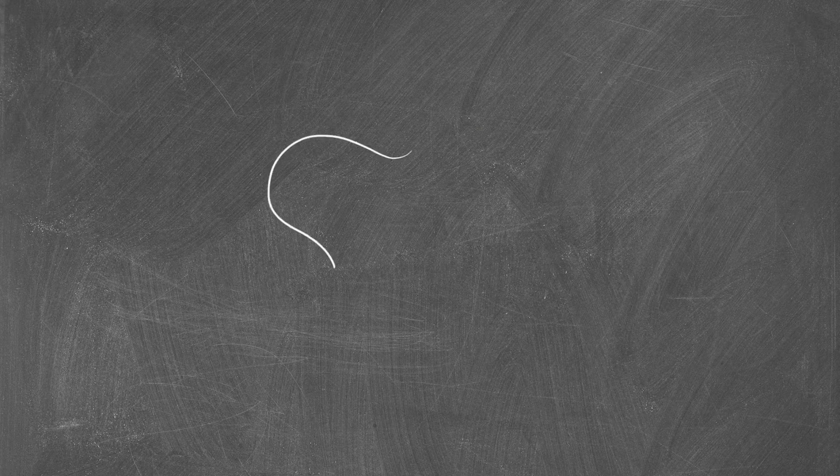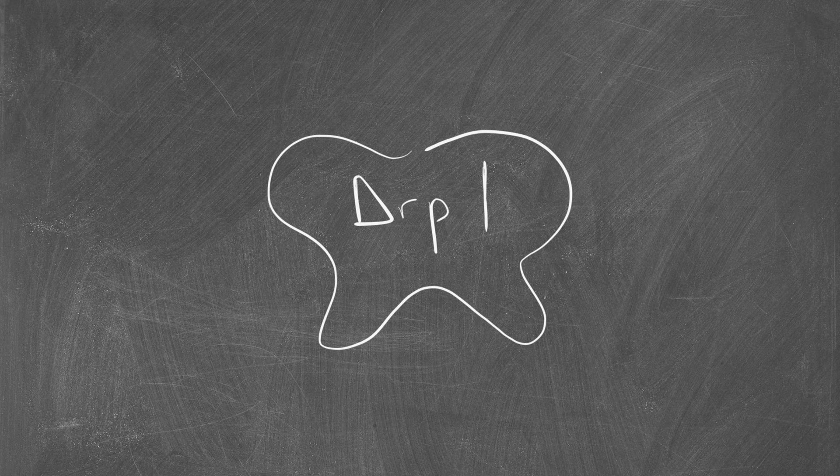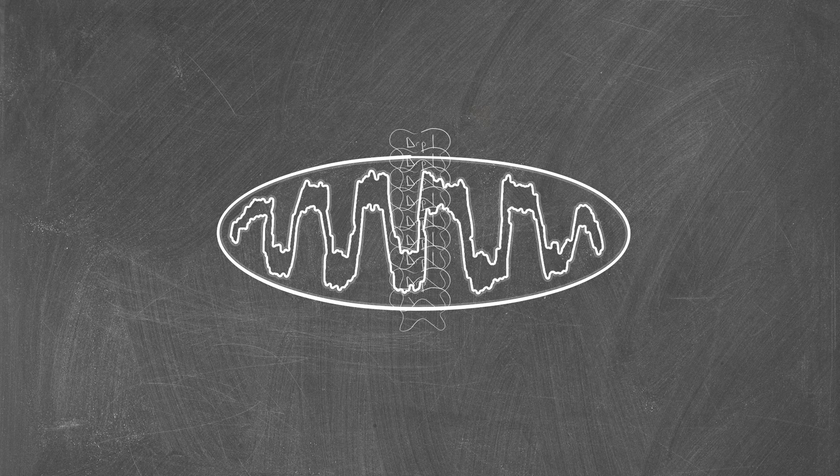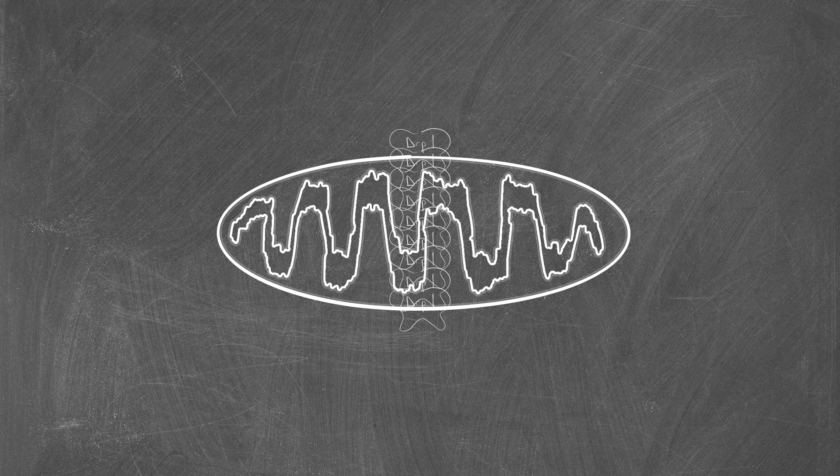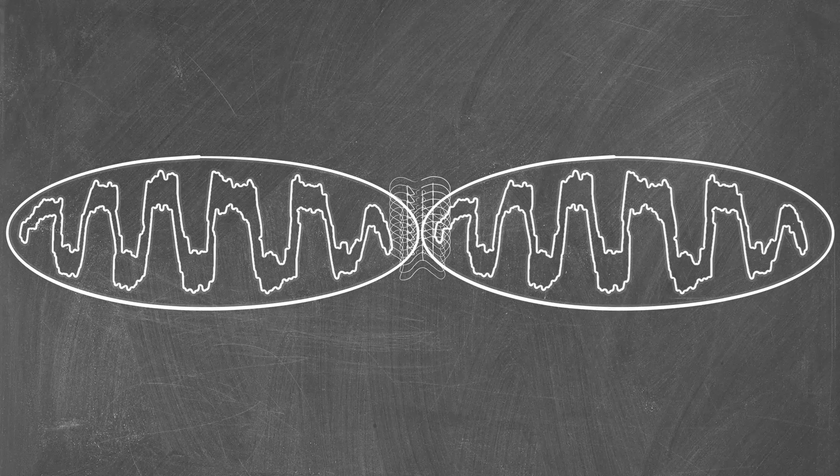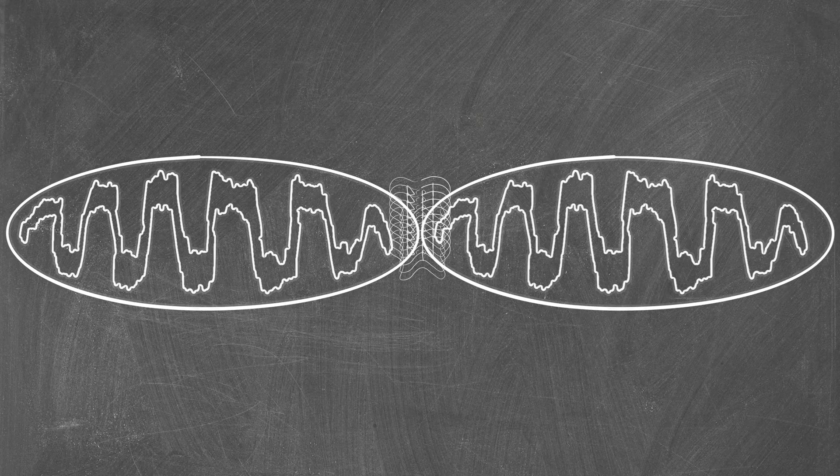Mitochondrial fission is catalyzed by dynamin-related protein 1, or DRP1, an enzyme that assembles into spirals around mitochondria. DRP1 uses GTP hydrolysis to power constriction of these spirals and ultimately severing of the two mitochondrial membranes.